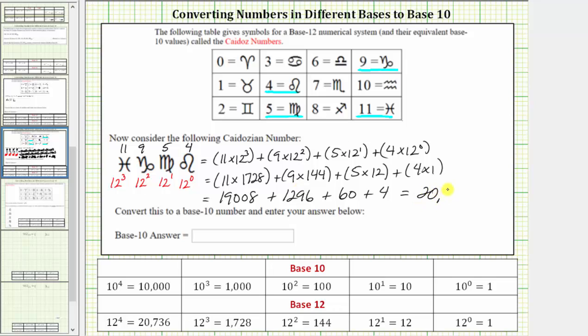And this sum is 20,368, which is the given number in base-10. So our final answer is 20,368 in base-10. I hope you found this helpful.